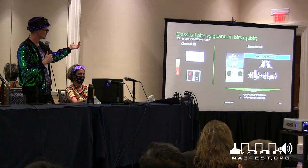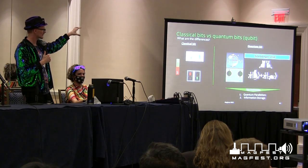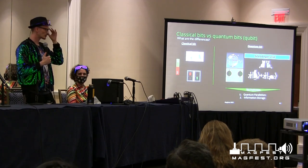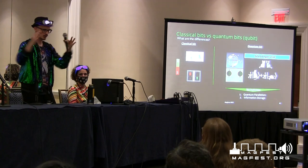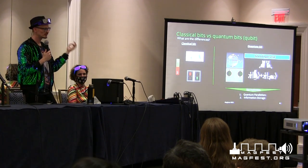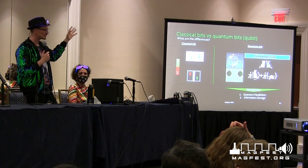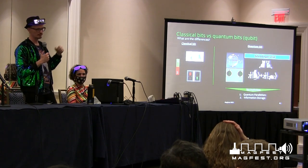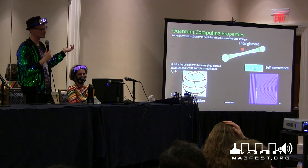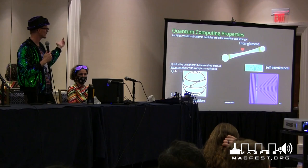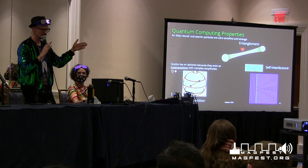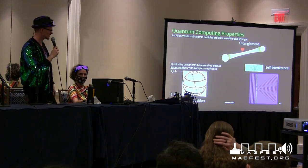Quantum computers have a sphere — the value can be anywhere on the surface — whereas a classical bit is a light switch. You can use a quantum algorithm: when you throw a stone in water and the waves focus in on one area, you can use interference patterns to make calculations way faster. A classical computer is just brute force. What's different about quantum is it does entanglement, interference, and superposition. Interference amplifies the correct answer and decrements the incorrect answer.